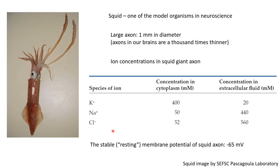When researchers measured the voltage inside this giant axon, the value was found to be around minus 65 millivolts. So we can say that the membrane potential of this axon is about minus 65 millivolts. This value depends on whether the neuron is at rest or is active — if the neuron is showing action potentials, this value will change and fluctuate over time. When the neuron is not active, this is called the resting membrane potential, which is minus 65 millivolts.